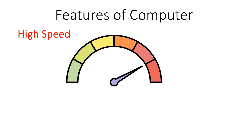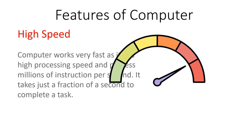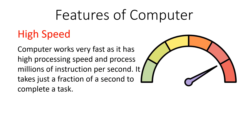First of all, high speed is a very important feature of a computer system that makes our computer a very useful device. Our computer works very fast as it has high processing speed and it can process millions of instructions per second. It takes just a fraction of a second to complete a task, which helps us do our work in very little time.